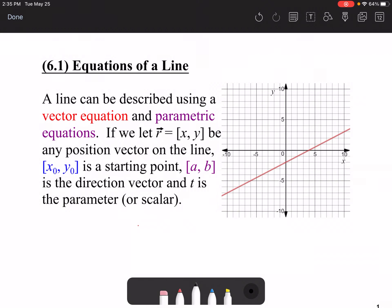Hello, and welcome to Lesson 6.1, Equations of a Line. Today we're going to take a look at various different equations of lines that we can see using various different properties of vectors. To start off, we're going to describe what is called a vector equation and a parametric equation.